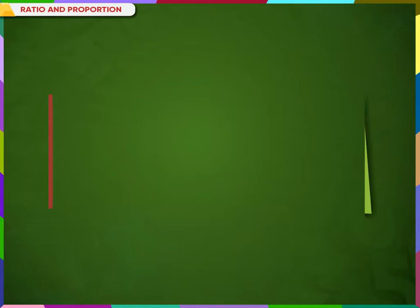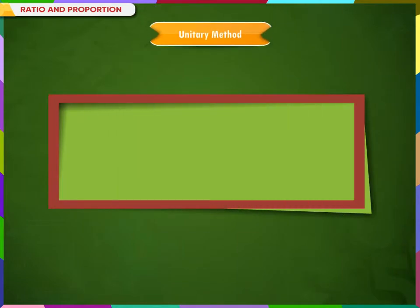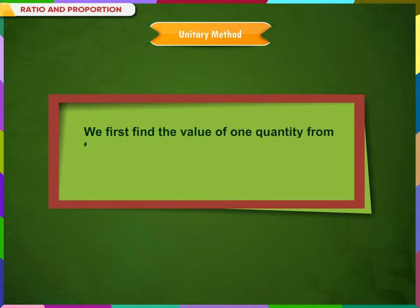Ratio and Proportion — Unitary Method. In the Unitary Method, we first find the value of one quantity from the value of the given quantity.